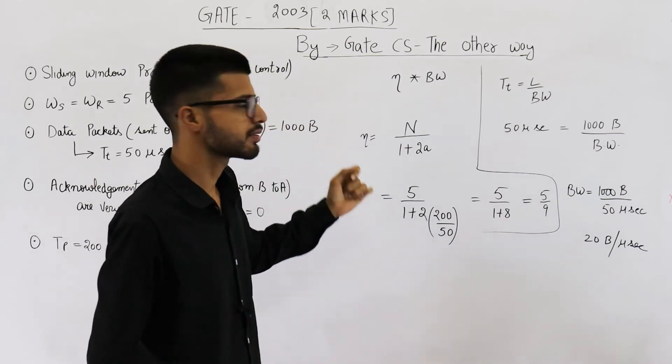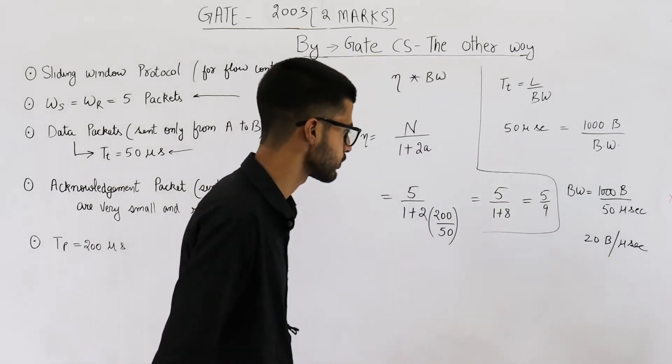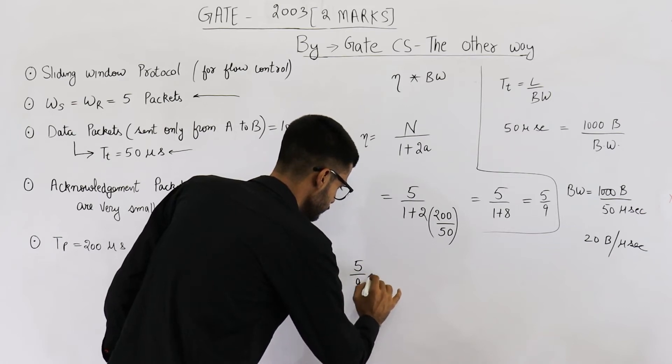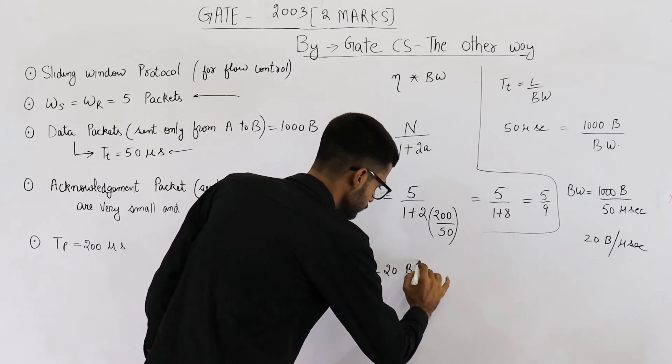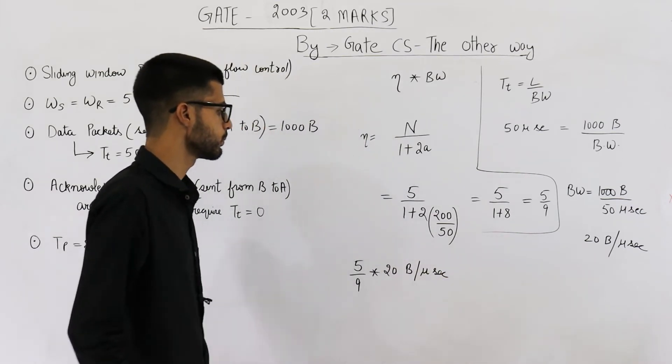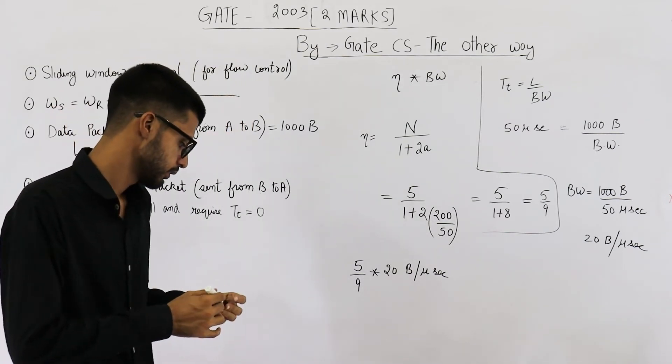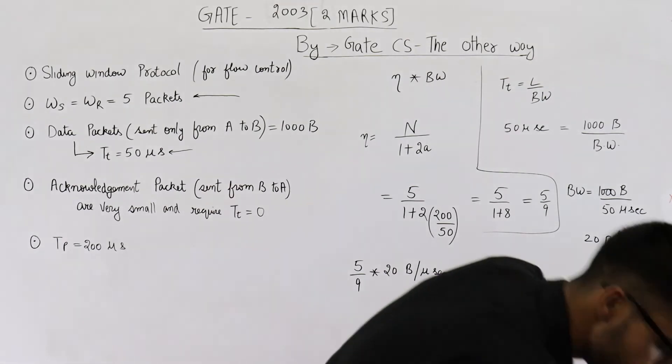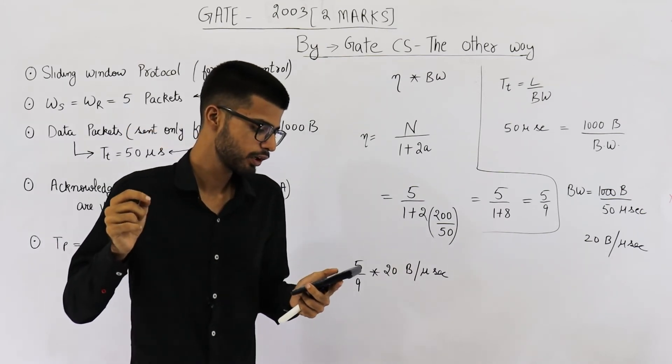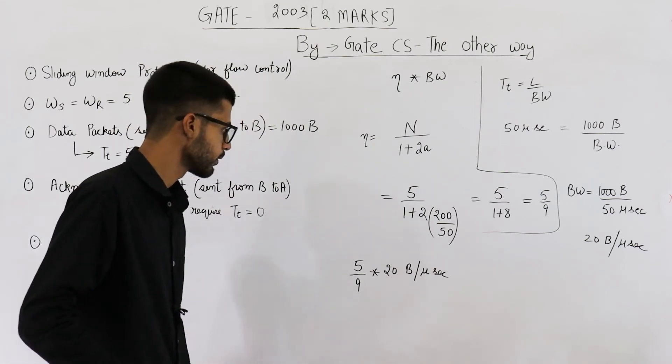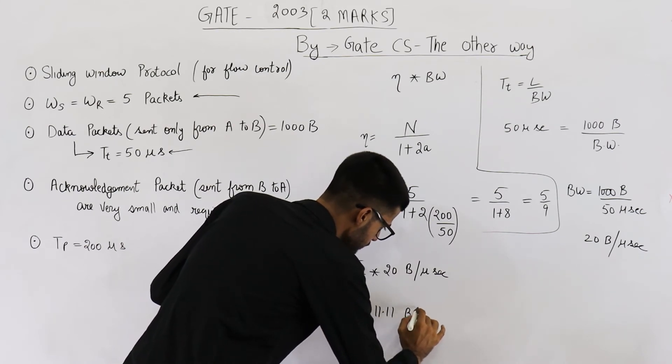20 bytes of data is sent in 1 microsecond. So now we just need to find the throughput that is efficiency into bandwidth. So multiply 5 by 9 with 20 bytes per microsecond. This comes out to be 100 by 9. So 100 by 9 will be 11 point something. Let me just calculate it, 100 divided by 9. Yeah, it is 11 point 1111. So this is equal to 11 point 11 bytes per microsecond.